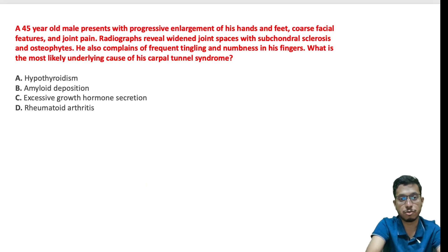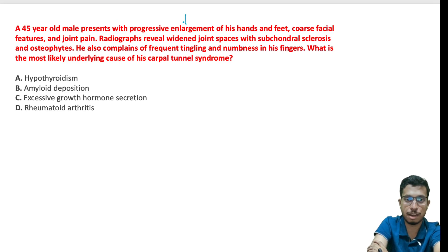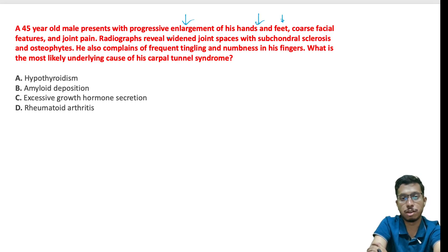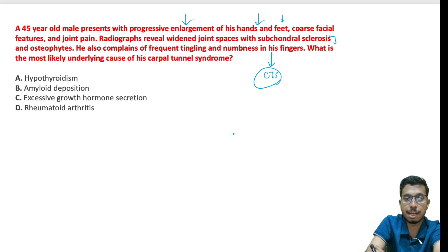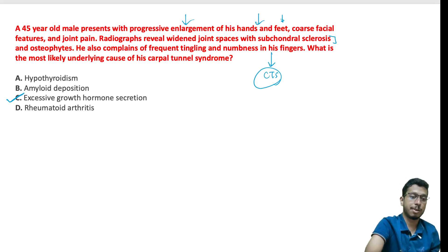MCQ 5 (final question): A man presents with progressive enlargement of hands and feet, coarse facial features, and joint pain. Radiograph reveals widened joint spaces with subchondral sclerosis — all features of acromegaly. He also complains of tingling and numbness in his fingers (carpal tunnel syndrome). The most likely underlying cause of his carpal tunnel syndrome is excessive growth hormone — option C.